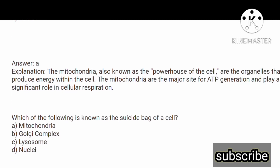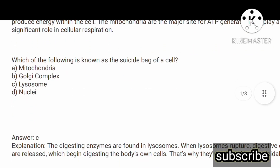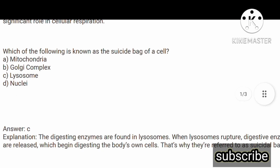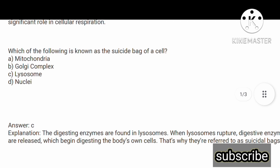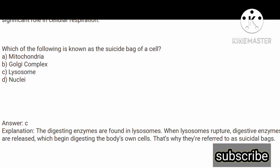Next question: which of the following is known as the suicide bag of a cell? Options are: mitochondria, Golgi complex, lysosome, and nucleus. The correct answer is option C, lysosome. The digestive enzymes are found in lysosomes. When lysosomes rupture, digestive enzymes are released, which begin digesting the body's own cells. That is why they are referred to as the suicidal bags.